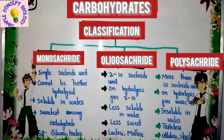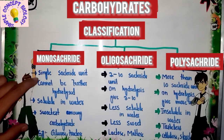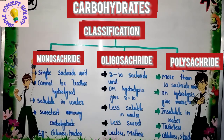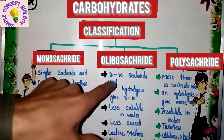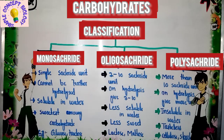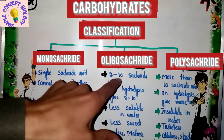The first one is monosaccharide. 'Saccharide' refers to sugar. When you hydrolyze a monosaccharide, you get only a single saccharide unit — a single sugar unit. It cannot be broken down further because it gives only a single saccharide unit on hydrolysis.